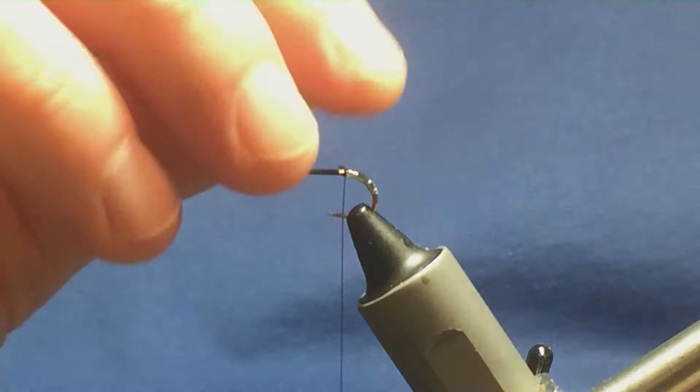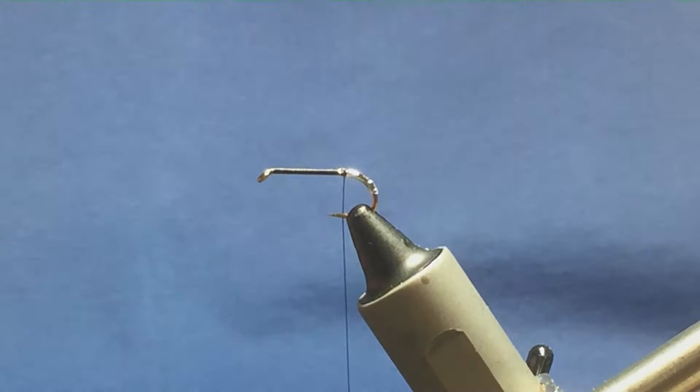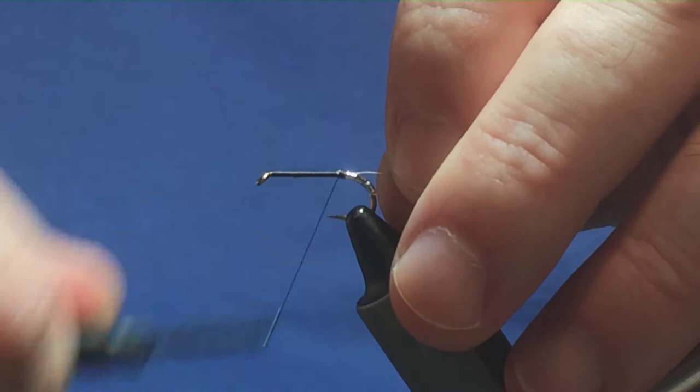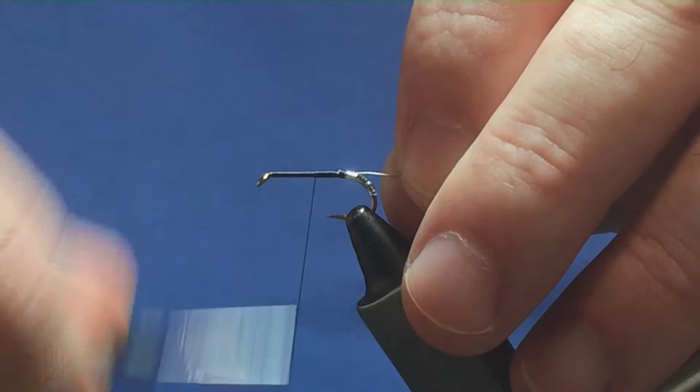Now the body is going to be the black thread, and to protect that I'm going to use a small silver wire. So I'm just going to tie this on my side, the length of the body. And then just run your thread up, tying this in.